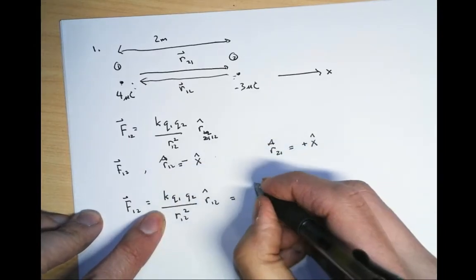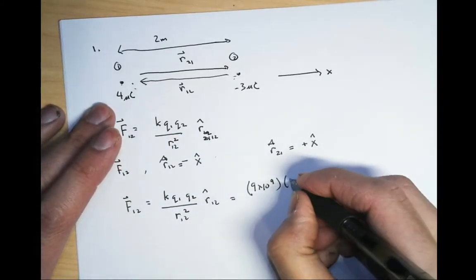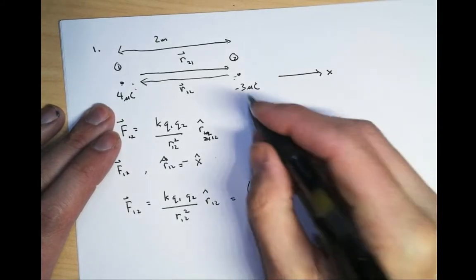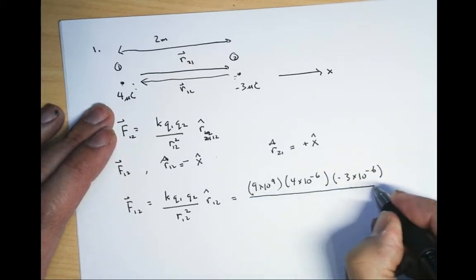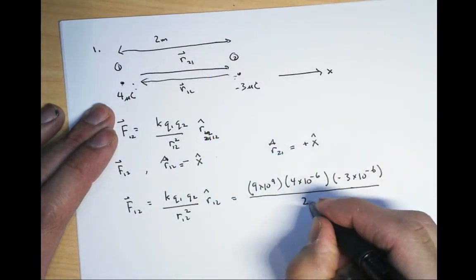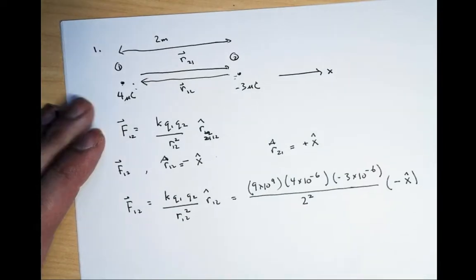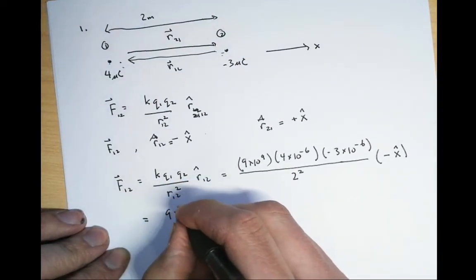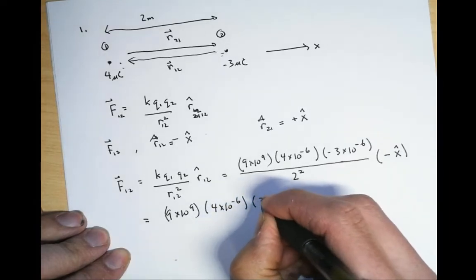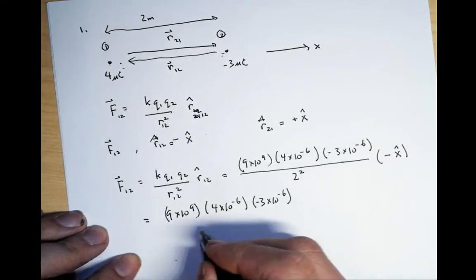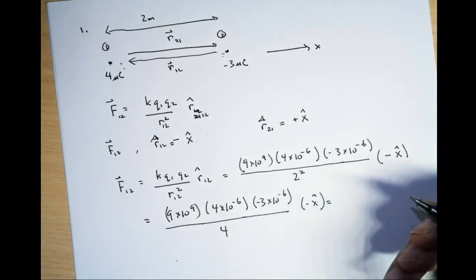So let's fill everything in. The force on one by two equals k·q1·q2 over r12 squared times r̂₁₂. k is 9×10⁹, q1 is 4×10⁻⁶ coulombs, q2 is minus 3×10⁻⁶ coulombs, divided by 2 squared, times minus x-hat.